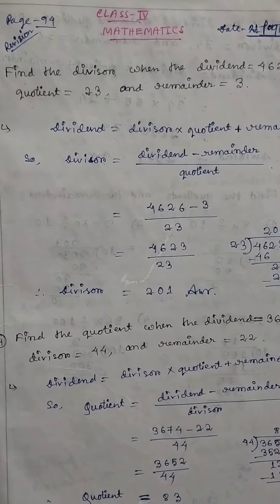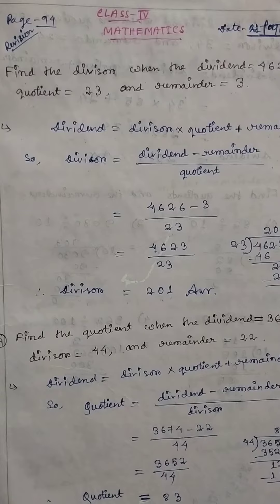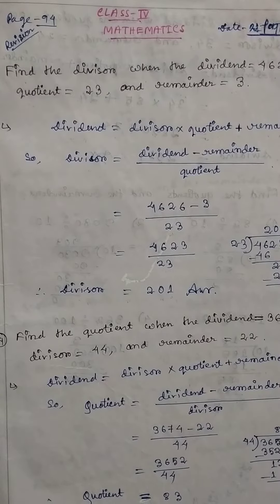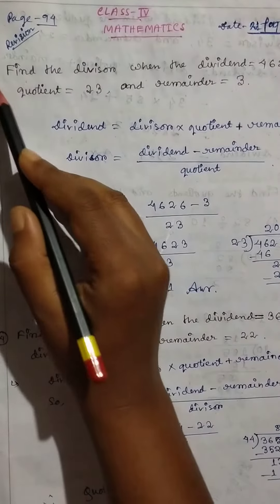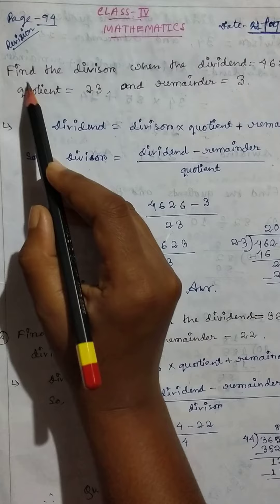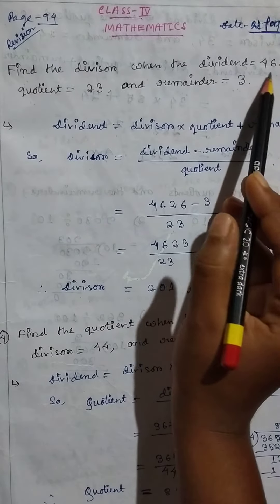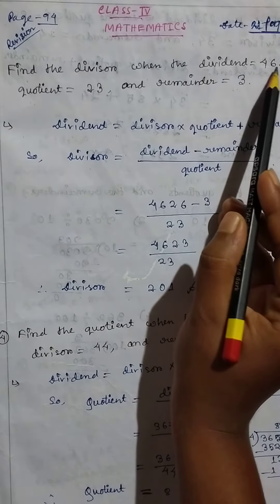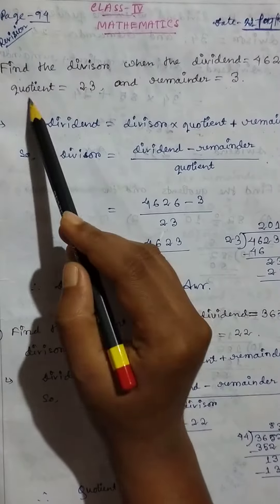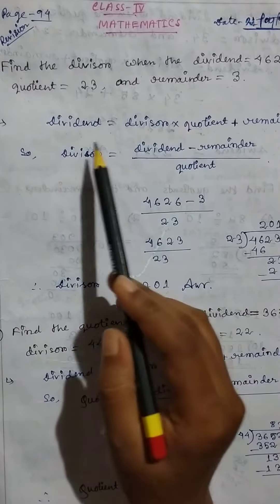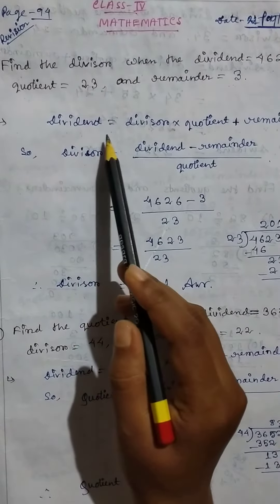Hello students, good morning. Class 4 Mathematics, 21st of September 2020, revision class. Let's start. Problem 3: Find the divisor when the dividend equals 4626, quotient equals 23, and remainder equals 3.